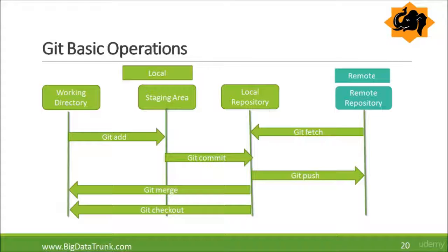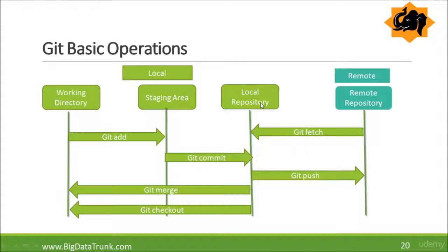Let us talk about some of the basic git commands. Before that, let us see what the basic git operations and flow look like. In this diagram you can see there is one working directory, a staging area, a local repository, and a remote repository. Basically, local is git and the remote is GitHub.